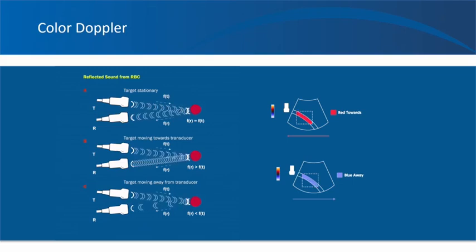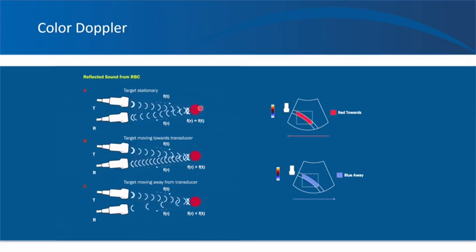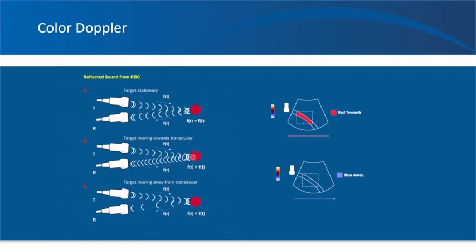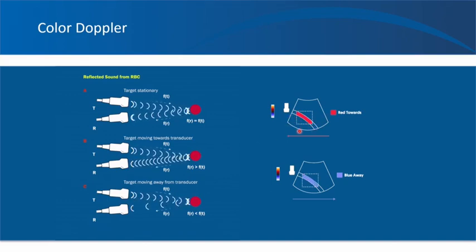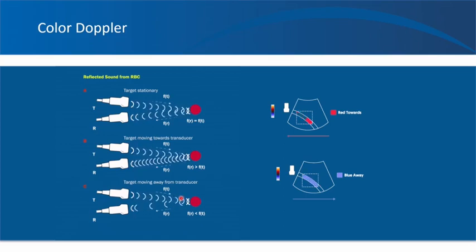Let me first remind you of the principle of color Doppler. Ultrasound involves transmitting sound waves and listening back to the echoes a particular structure reflects. When the object is stationary — assume in this case RBCs in blood vessels — the reflected frequency is the same as the transmitted frequency. If the RBC is moving towards the probe, the reflected frequency is higher, and that flow is depicted in shades of red. When the RBC is moving away from the probe, the reflected frequency is lower, and that is represented in shades of blue.